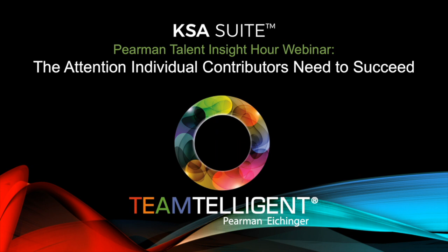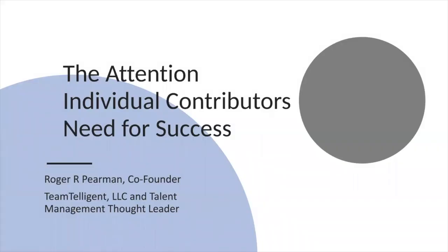Welcome to the Pyramid Insight Hour. Today we're going to talk about a topic that has been near and dear to me for quite some time as it relates to working in talent management inside organizations. When Bob Eichinger and I started creating libraries to look at roles and practices, one of the things I expressed early on was that it was time we paid attention to individual contributors, because individual contributors are often the most ignored groups in organizations.